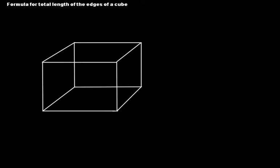Hi everyone, welcome back to another video where we are going to learn how to write the rule for total length of the edges of a cube. In the previous videos we have been discussing how to set the rule to express different things. In this case what I'm going to discuss is a very interesting shape and geometry — that is a cube. We have learned about square, rectangle, quadrilaterals, and polygons. All those shapes are actually two-dimensional.